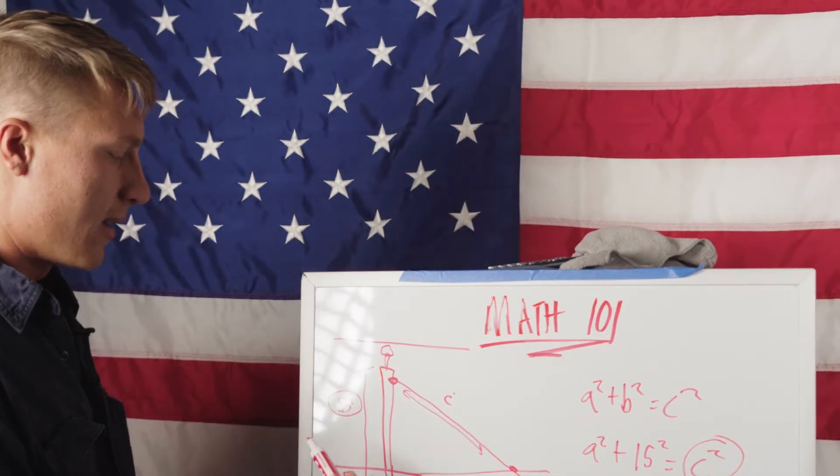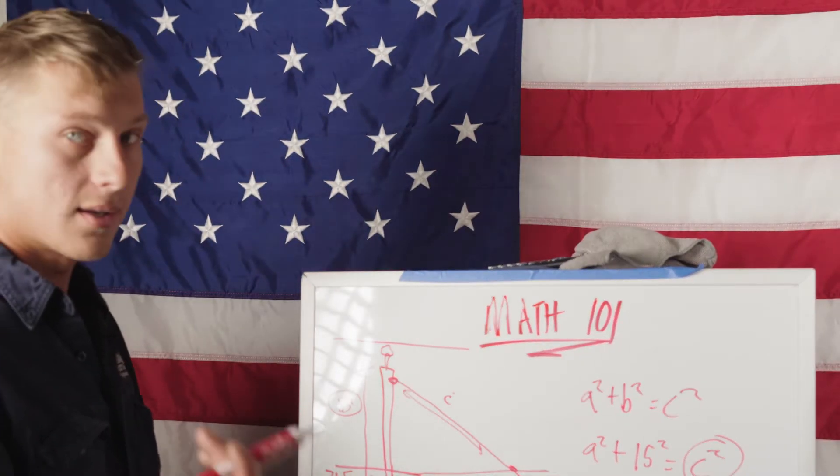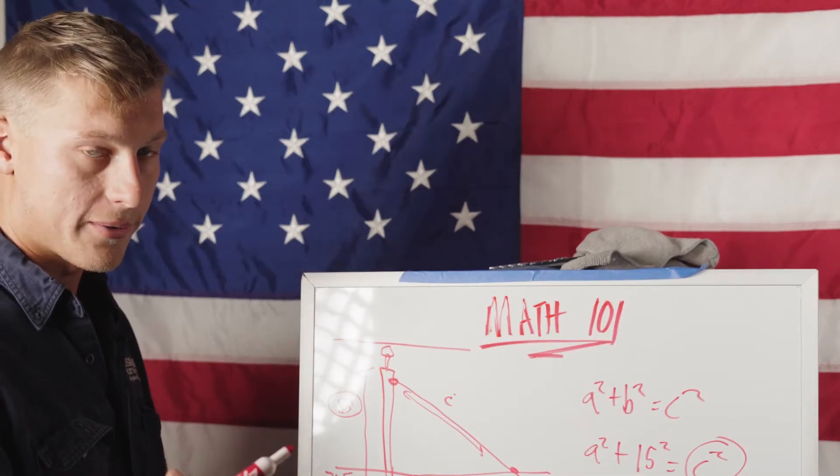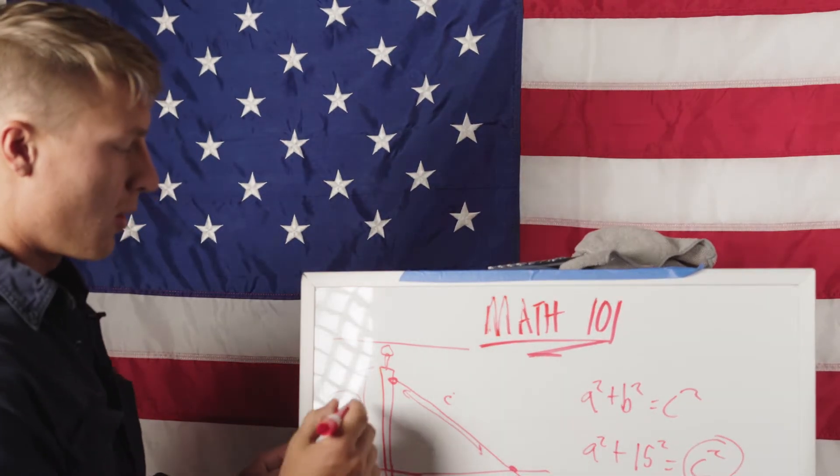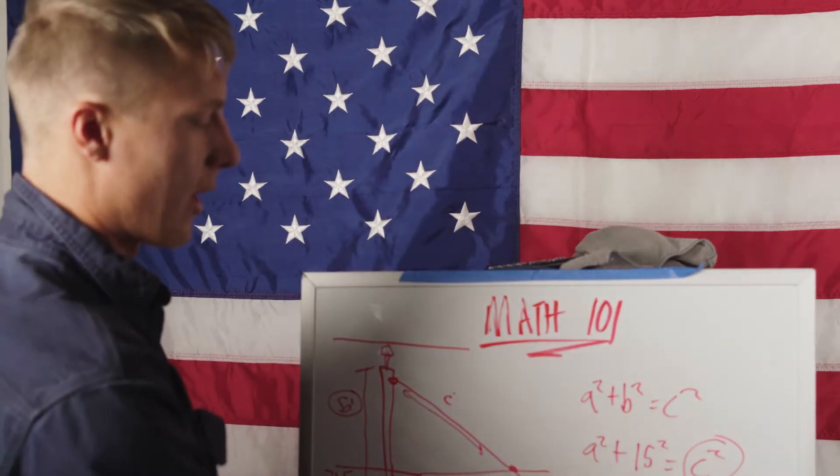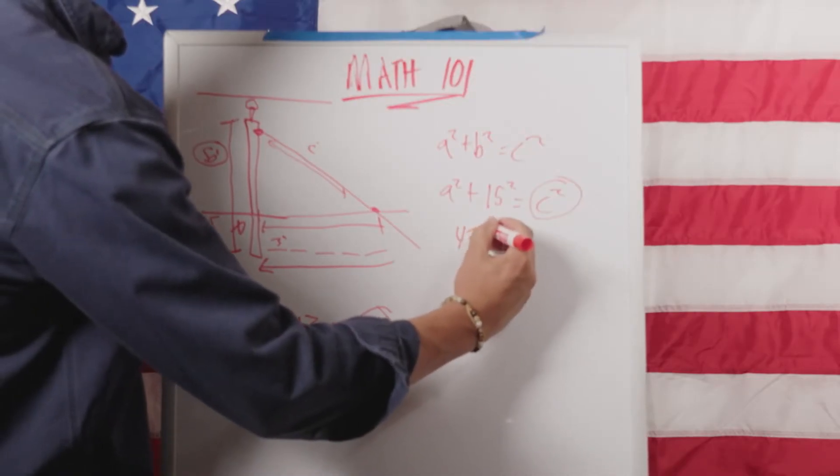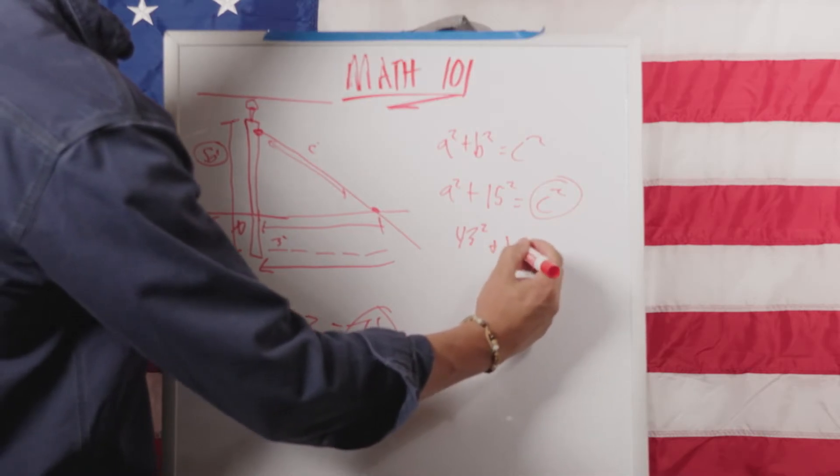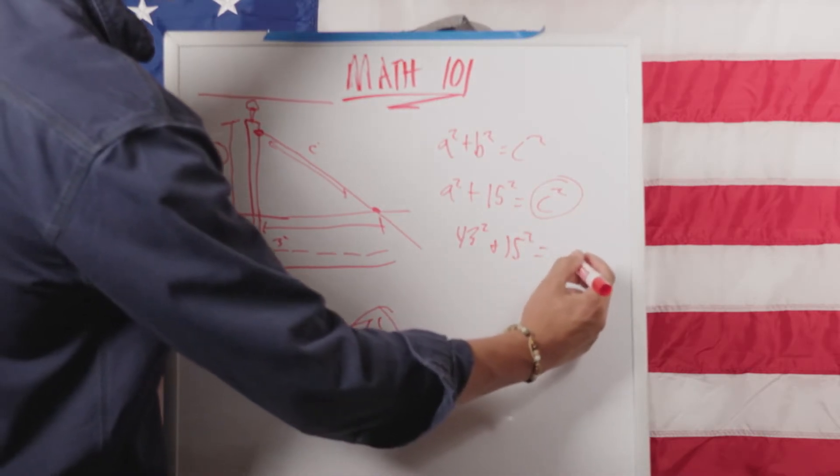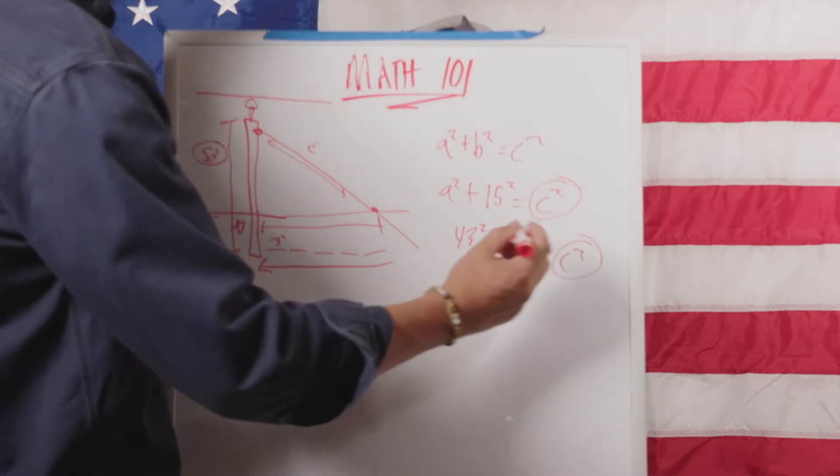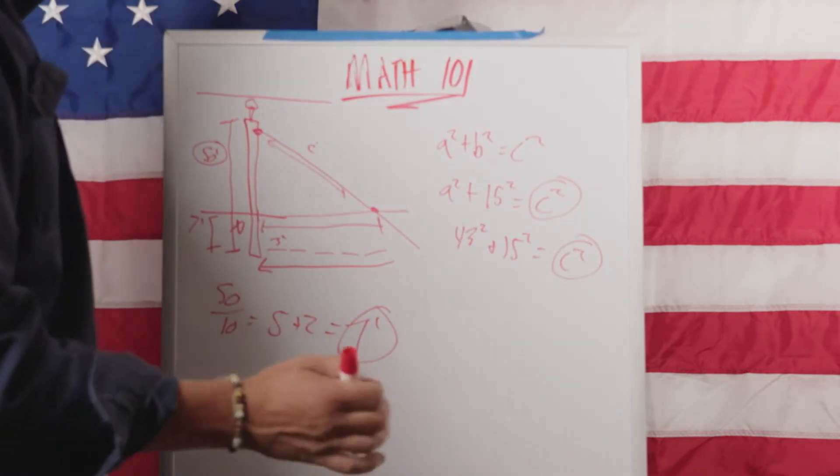So we know that the pole butt is about 7 feet in the ground. Okay, so all we do is 50 - 7, which is 43. So we know this value here, which we'll call A, is 43.